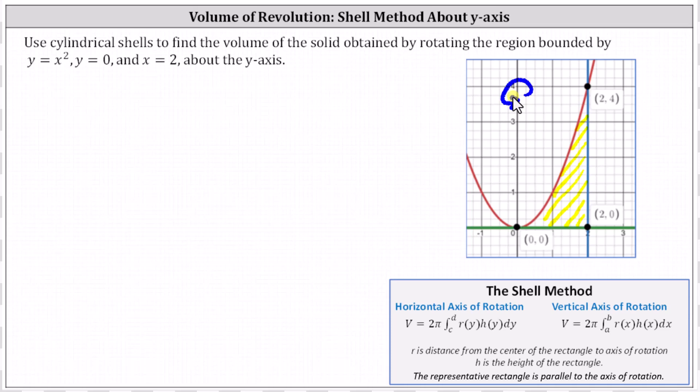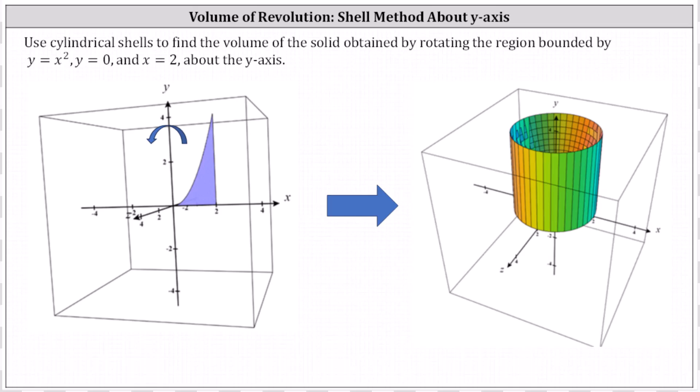Let's first take a look at this in three dimensions. On the left, we have the bounded region R graphed in three dimensions. And then if we rotate this bounded area about the y-axis, we get the solid shown here on the right. Our goal is to determine the volume of this solid.